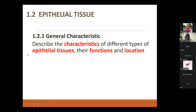We will start with the first type of tissue: epithelial tissue. For each tissue type, what you need to know is the characteristic, the function, and the location. These are the three things you must understand and memorize.